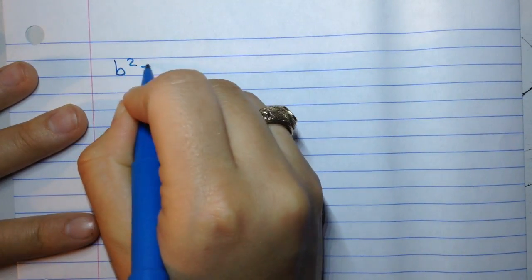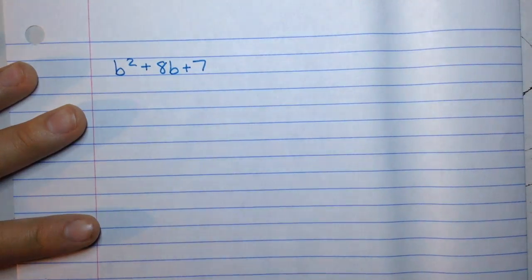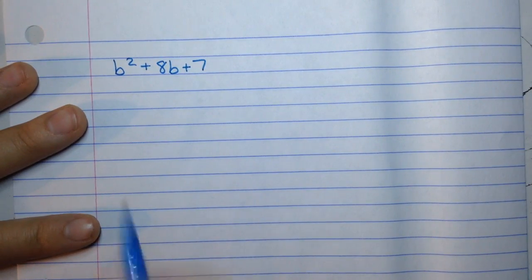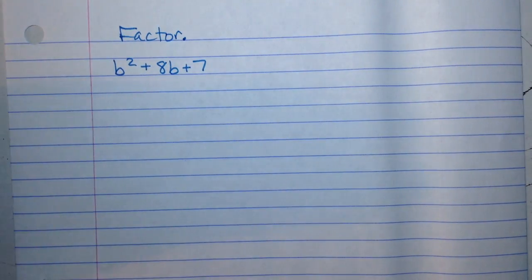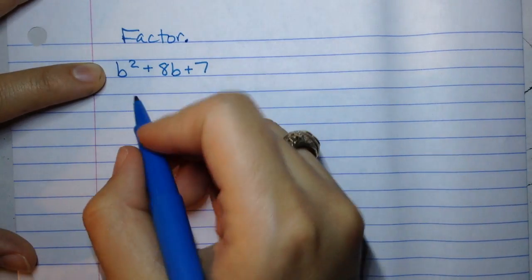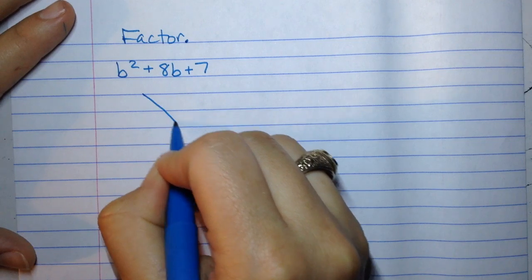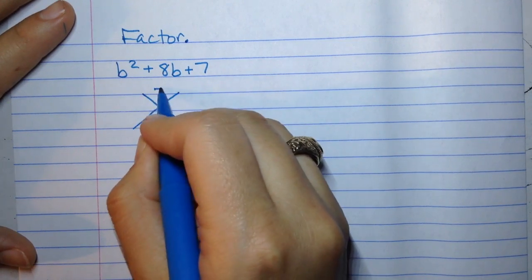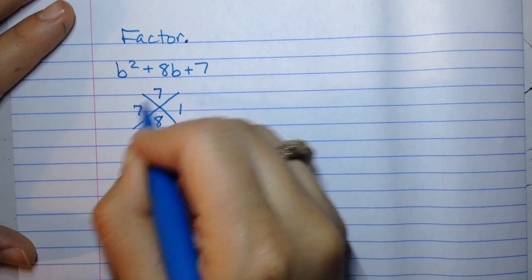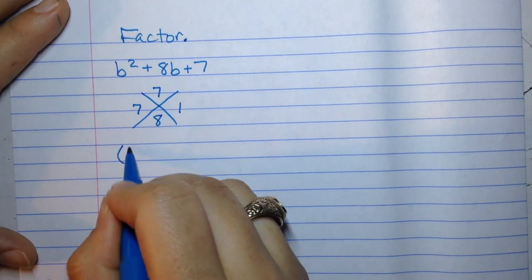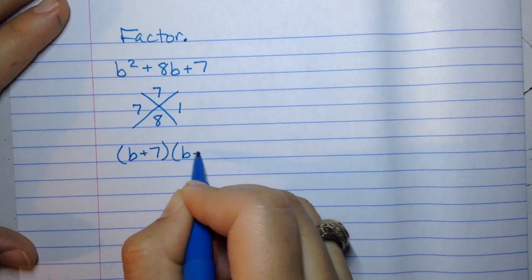We have b squared plus 8b plus 7. We want to factor all of these. The instructions will say factor, period. To factor means to get it in its factored form, things that will multiply together to make the larger expression. We know that to factor these, we set up an x puzzle. a times c, b. Only thing that works there is 7 times 1. 7 times 1 is 7, 7 plus 1 is 8. So we have that this is (b plus 7)(b plus 1).